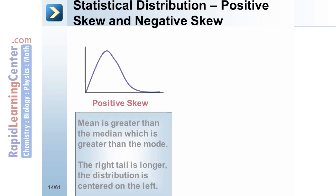In positive skew, the mean is greater than the median, which is greater than the mode. The right tail is longer and the distribution is centered on the left.